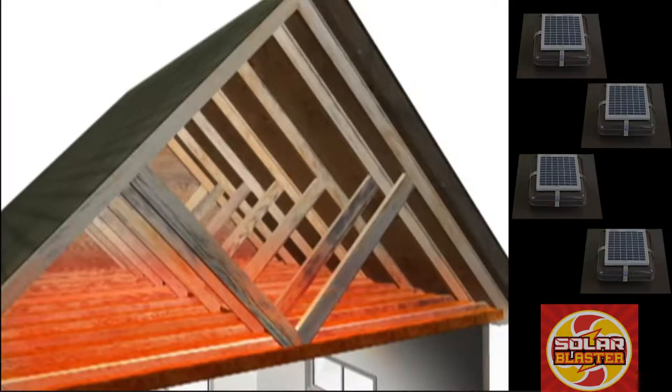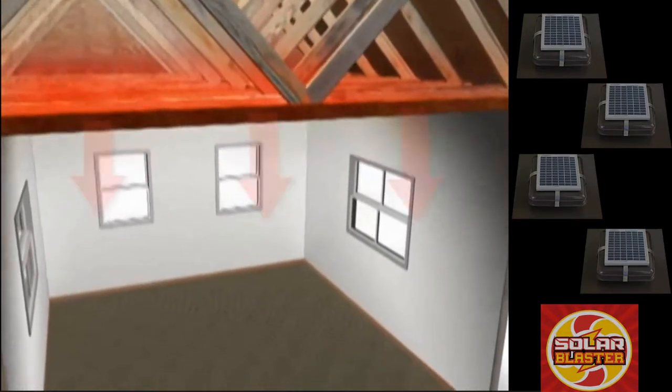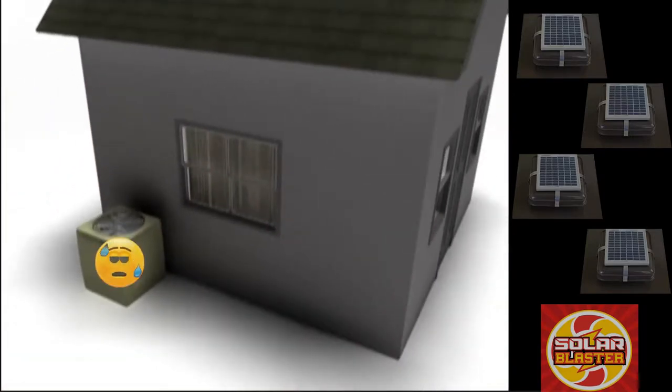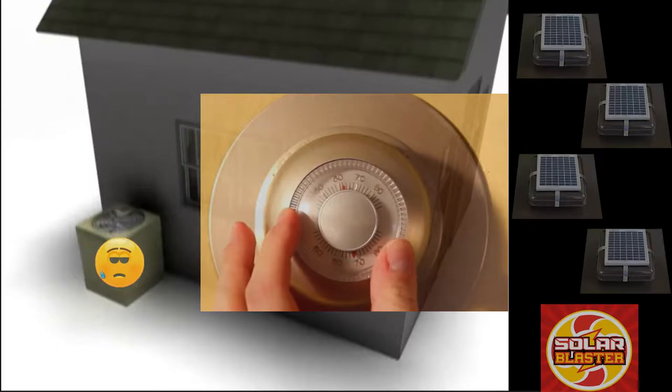The heat your insulation can't absorb radiates into your home's living space, causing your air conditioner to run longer and more often to keep your home at the temperature you set.